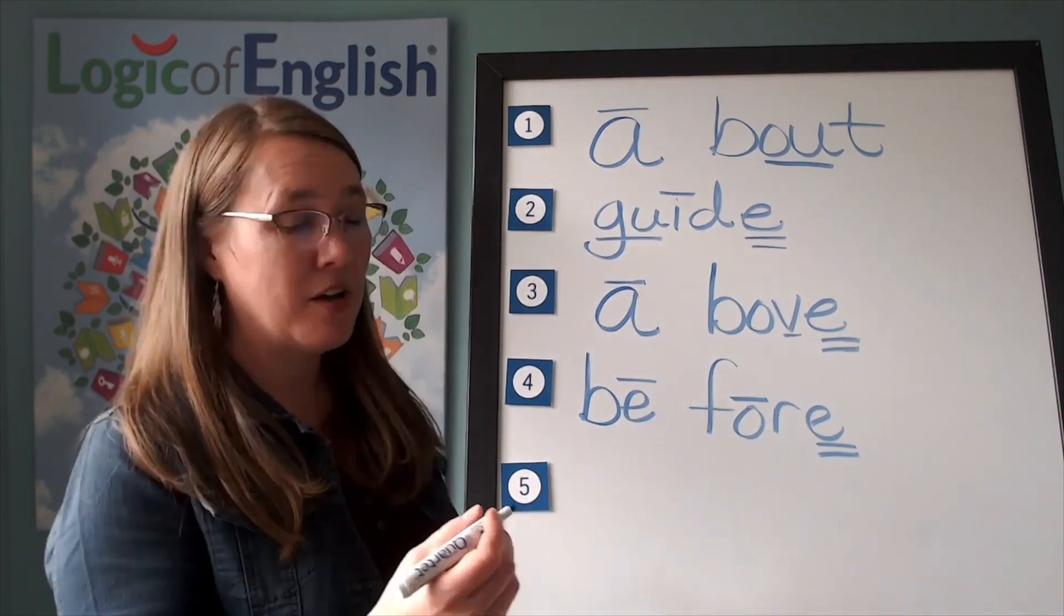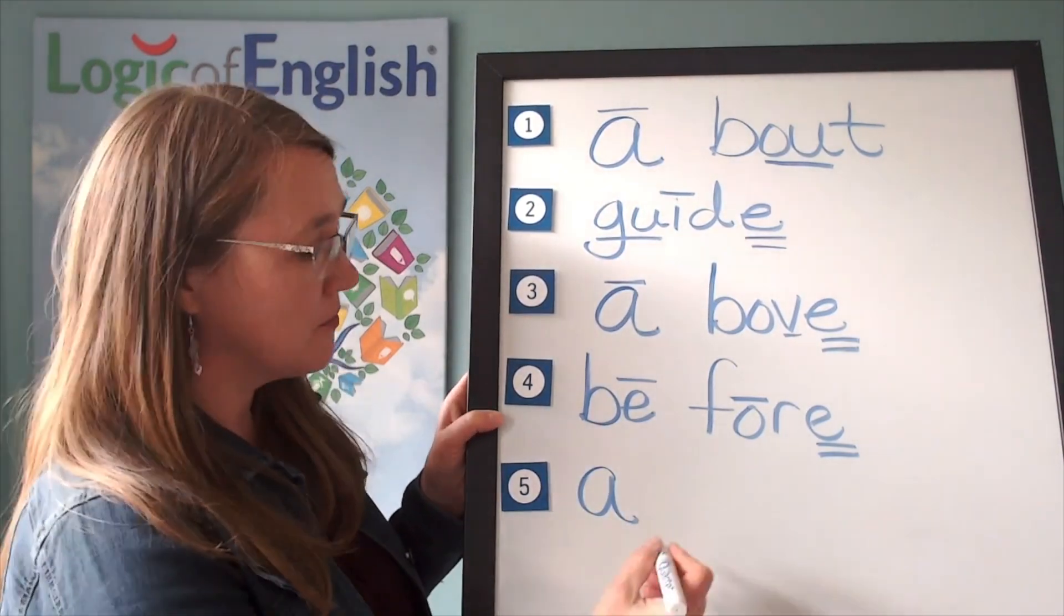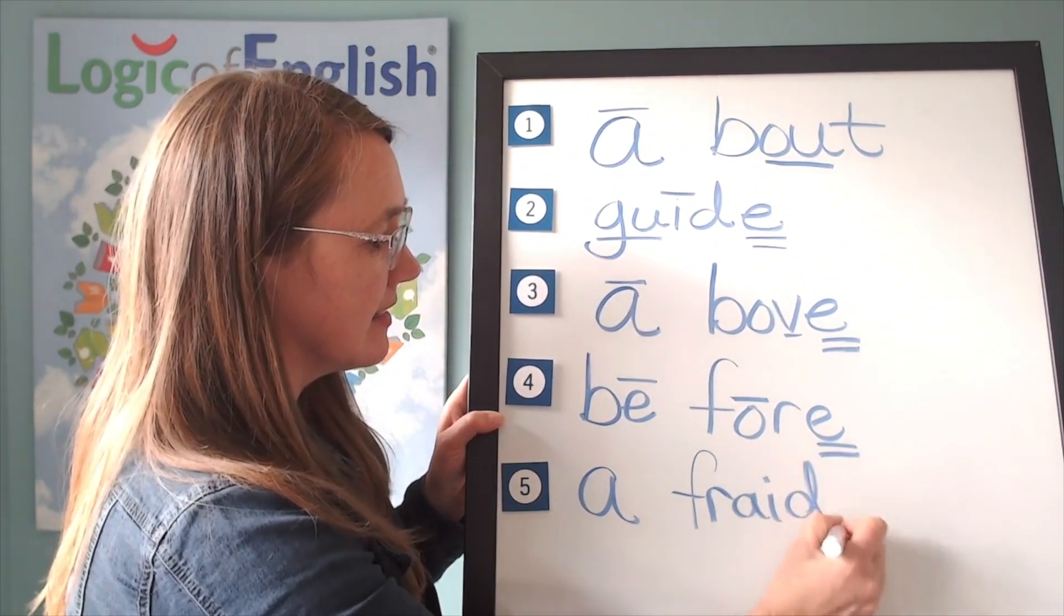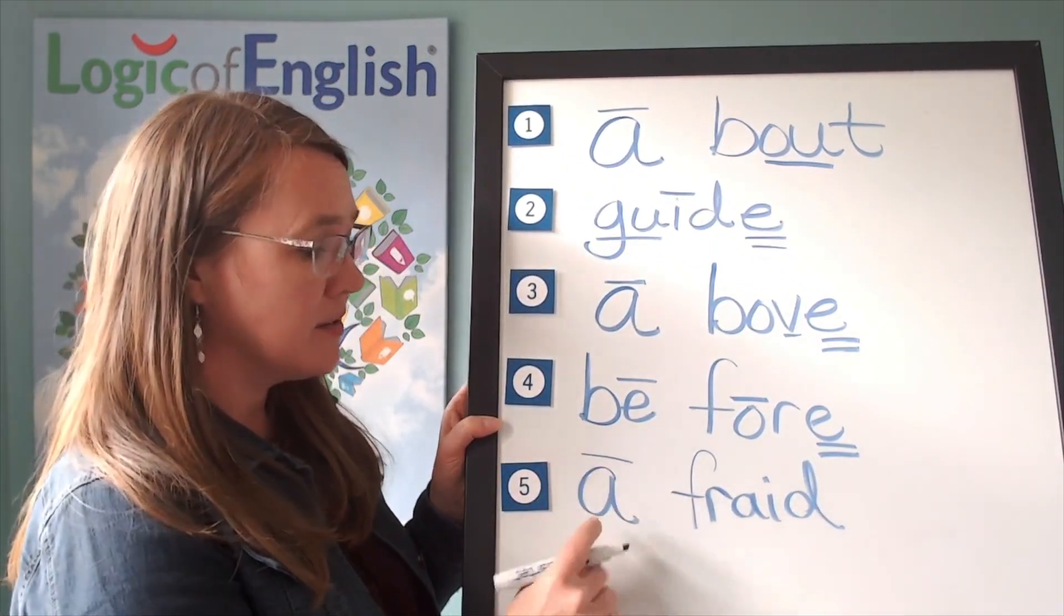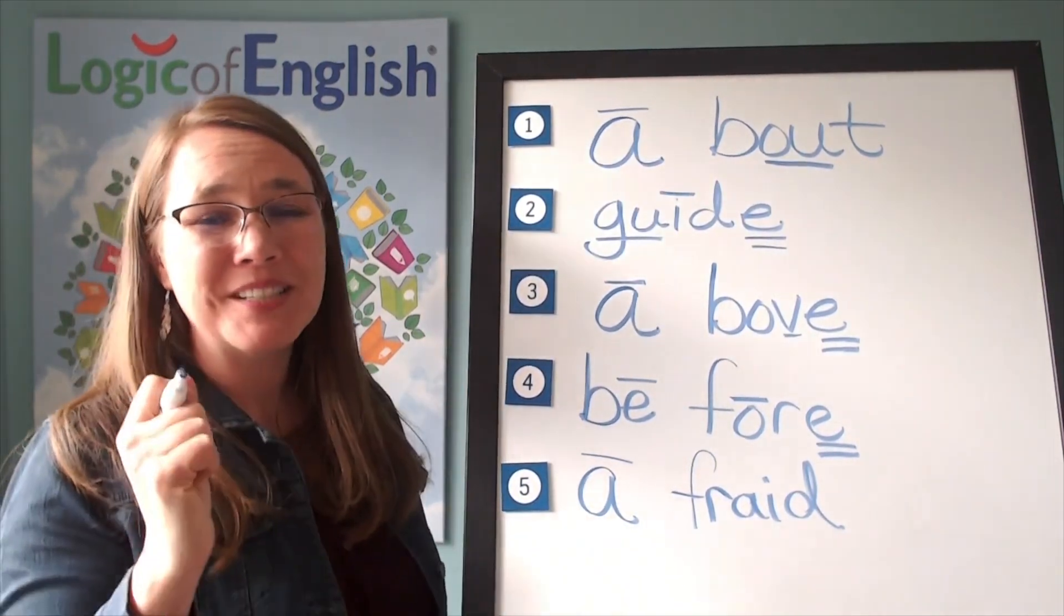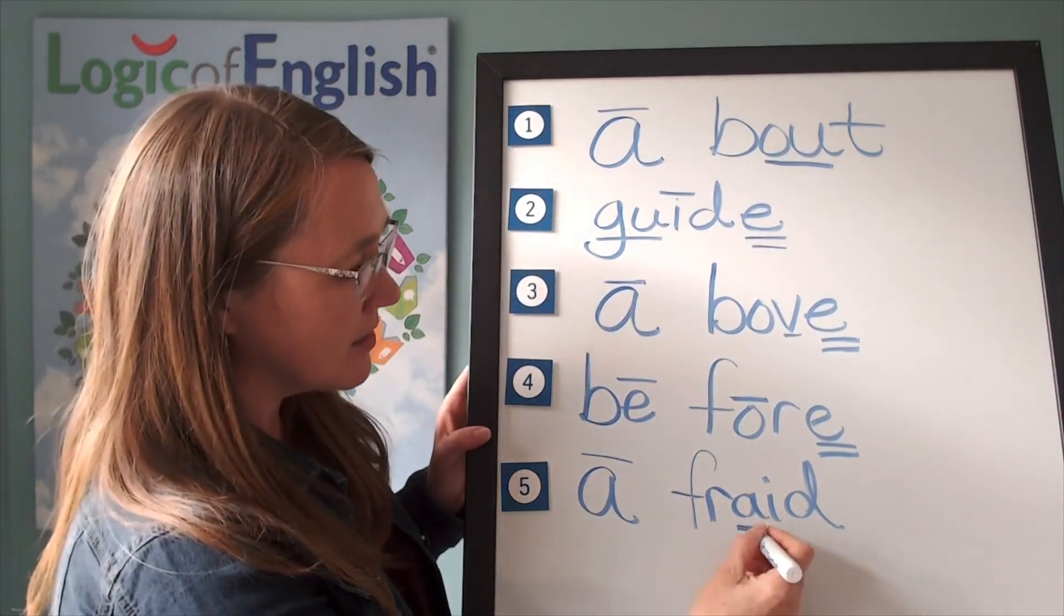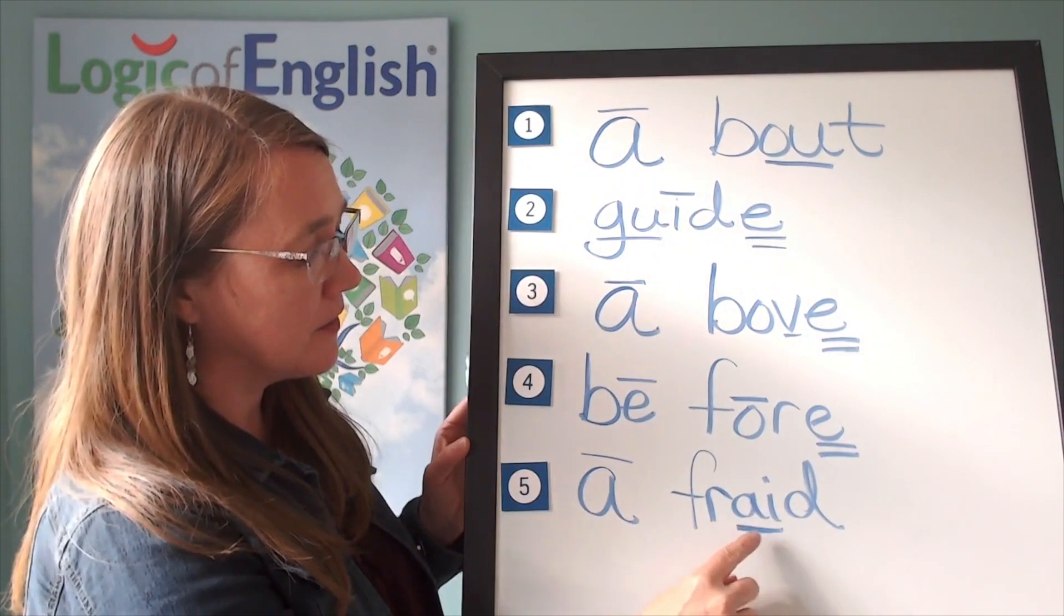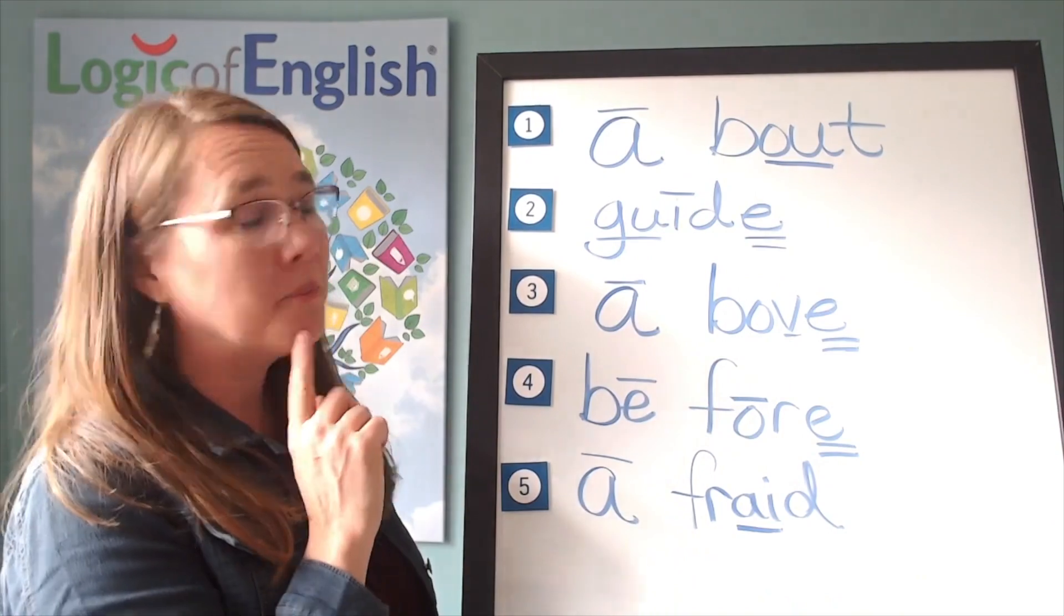Very good. Now help me to write it. The first syllable is A. The second syllable is afraid. F, R, A, D. How will we mark this? We'll put a line over the A. And why did the A say its long sound? A, E, O, U usually say their long sounds at the end of the syllable. And we'll underline the A. Let's sound it out. A, F, R, A, D. Afraid. Or we say afraid.